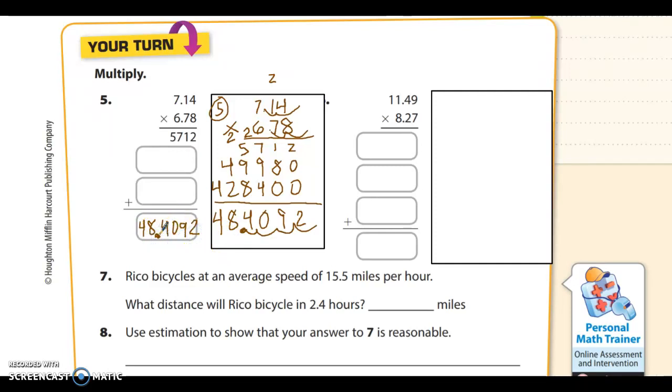Let's check for reasonableness. This would round down to 7, this would round up to 7. 7 times 7 is 49. My answer was about 48, which means that is reasonable. So we are pretty confident we got it right.